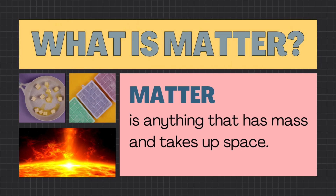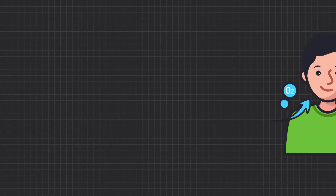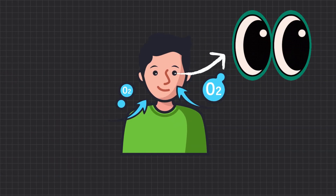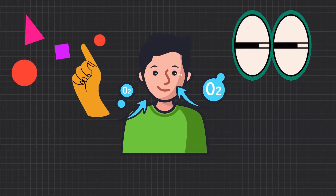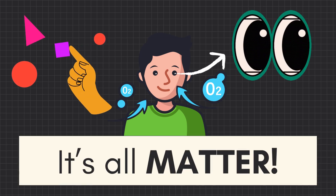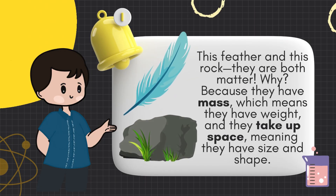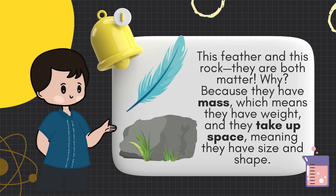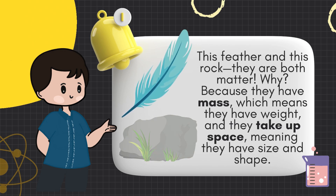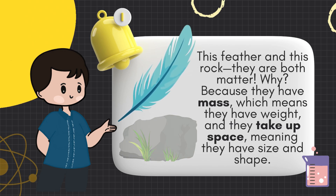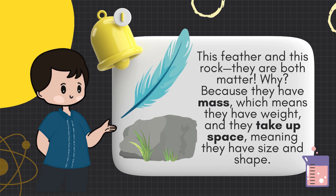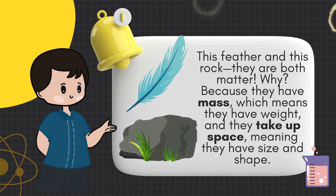Matter is anything that has mass and takes up space. That means every object you see, touch, or even breathe, it's all matter. This feather and this rock — they are both matter. Why? Because they have mass, which means they have weight, and they take up space, meaning they have size and shape.